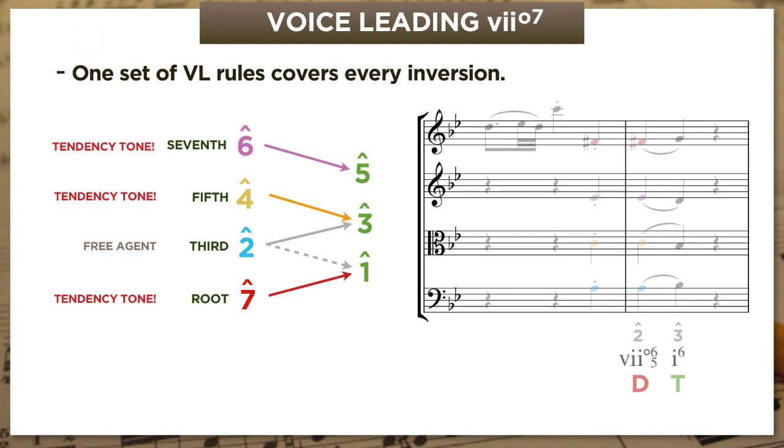And then Haydn's next two bars are no less by the book. Now he puts the leading tone in the melody—an octave higher than it was before—but it does the same thing, and so does everyone else. Blue scale degree 2 goes up, yellow scale degree 4 goes down, and purple scale degree 6 goes down as well—check it out.